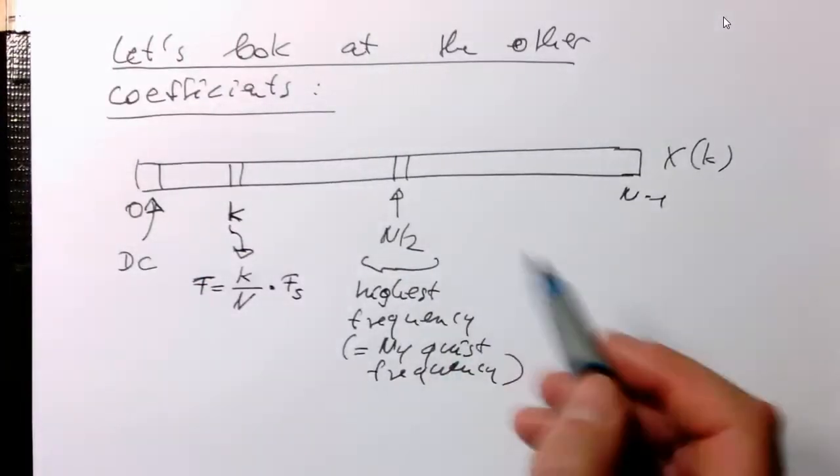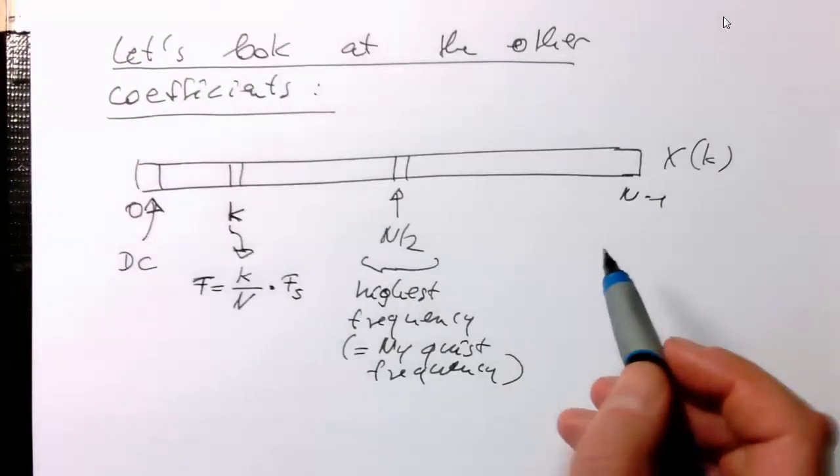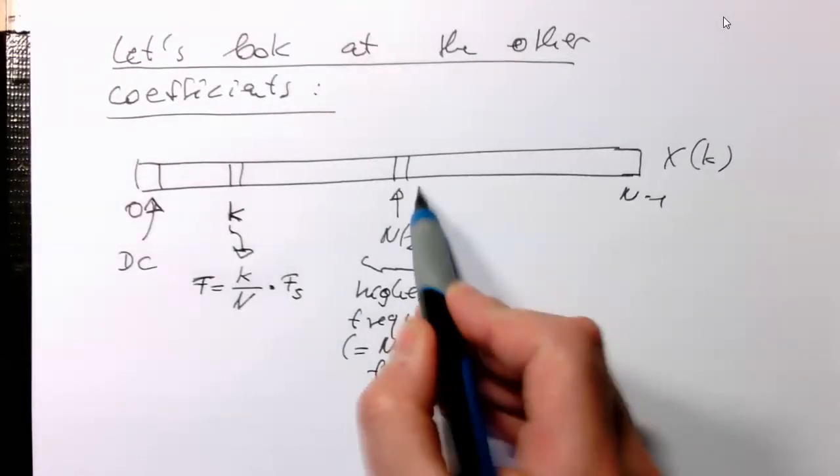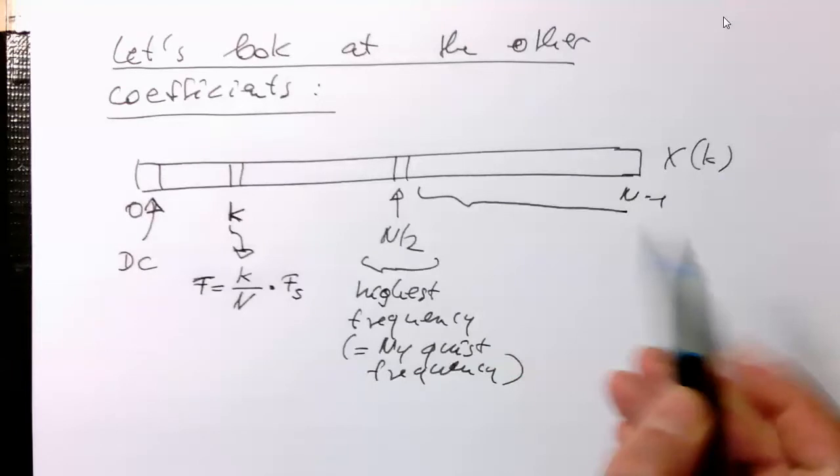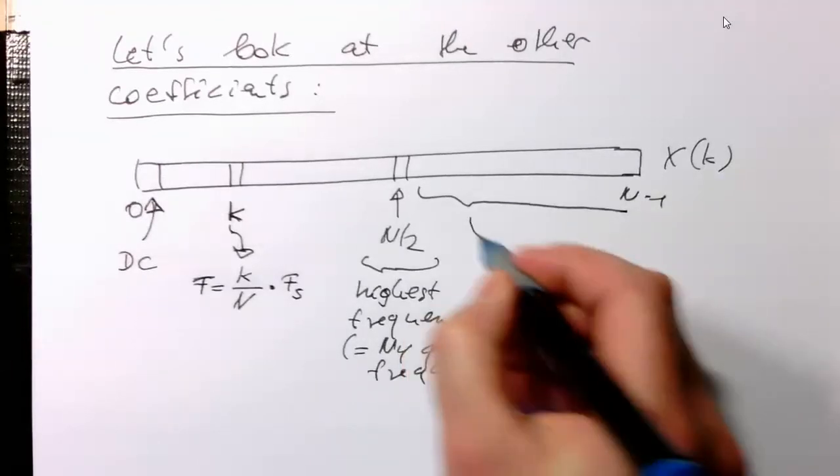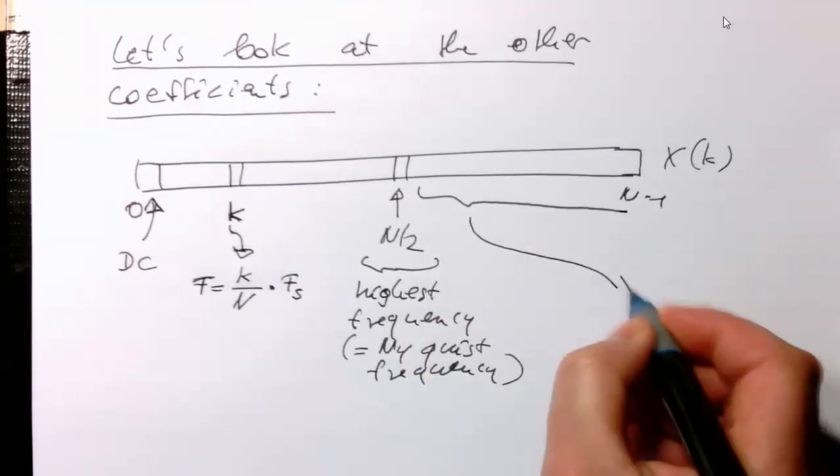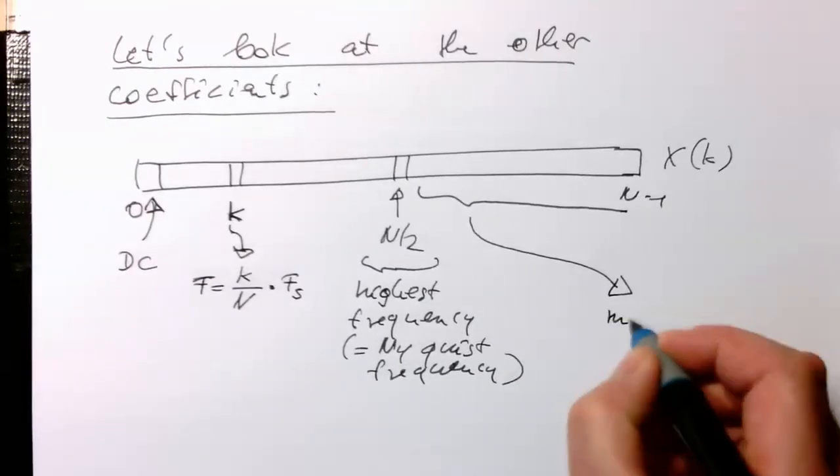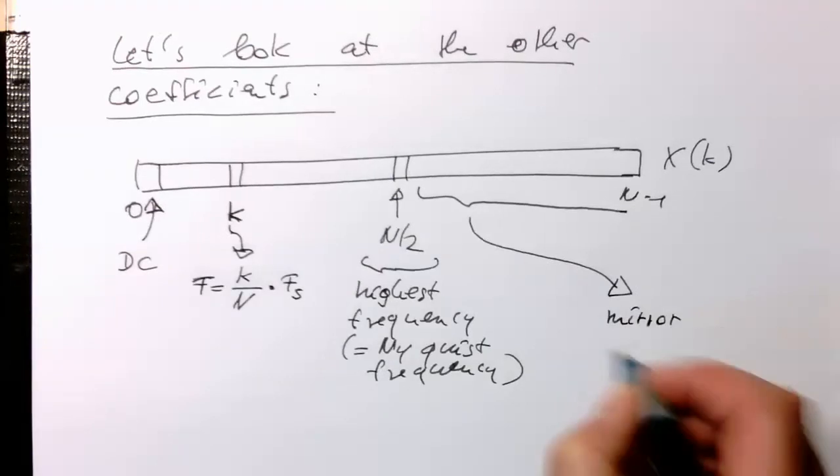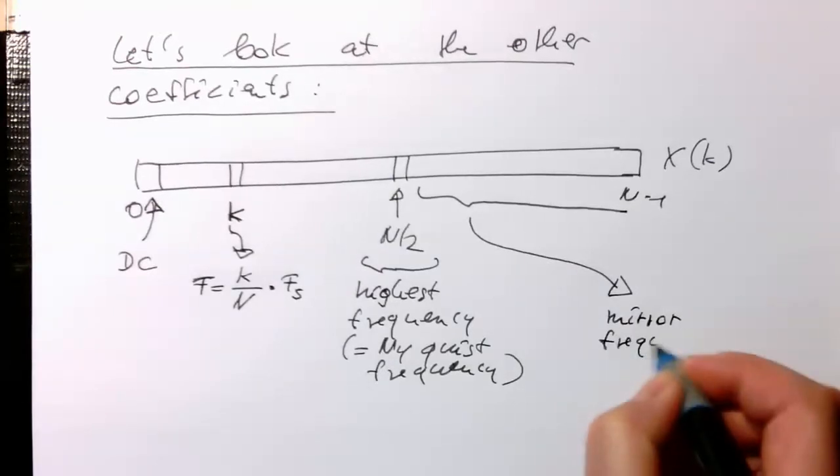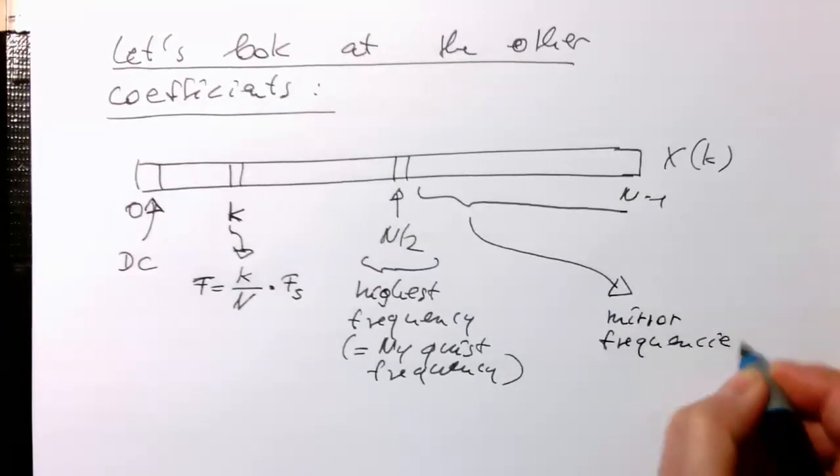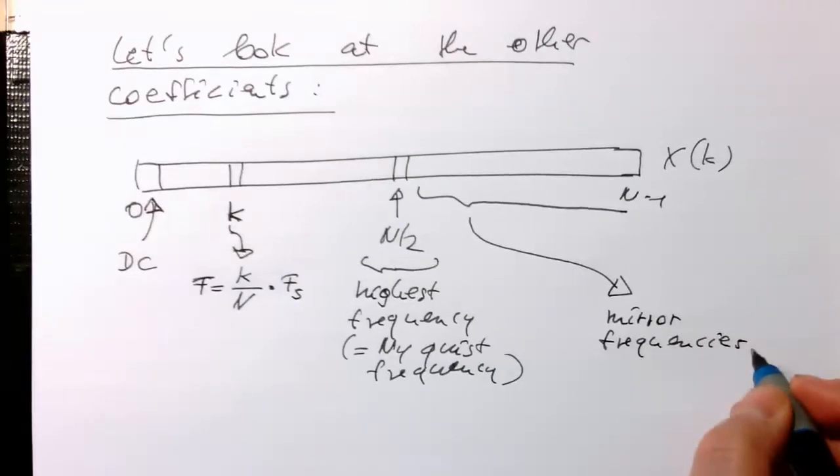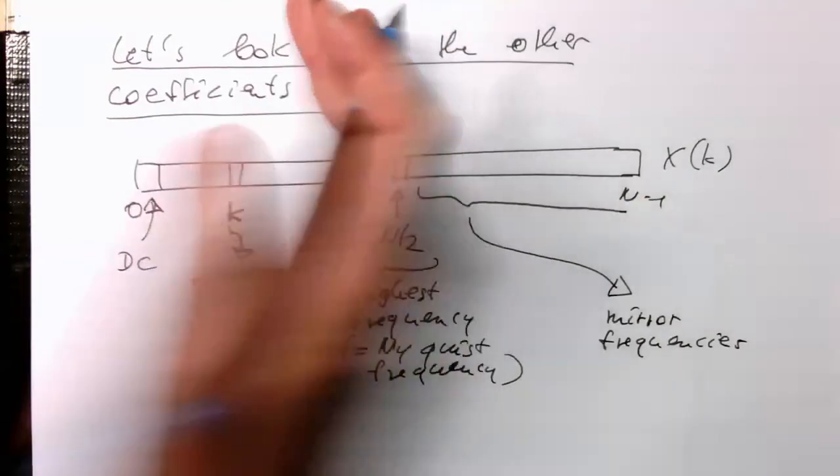So the question is now what is actually happening here. What frequencies do we have here? These frequencies are going down again. So these are the mirror frequencies here, mirror frequencies of all the frequencies which we have on that side here.